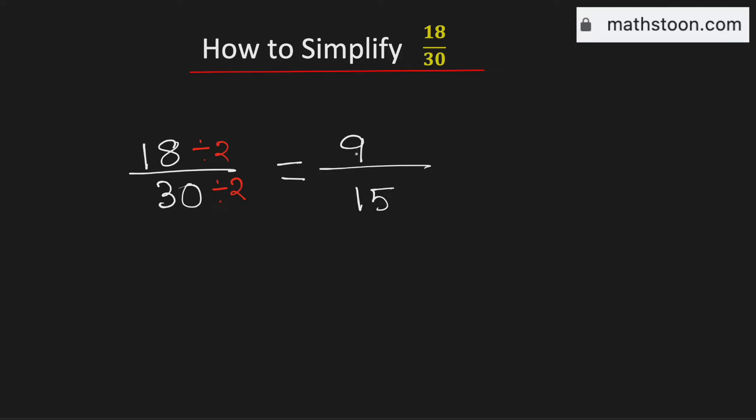Again, we know that 9 and 15 are divisible by 3. To simplify it further, we divide them by 3. By doing so, we get 3 over 5. As both 3 and 5 are prime numbers, this fraction cannot be simplified further. Therefore, 3 over 5 is the simplified reduced form of the fraction 18 over 30.